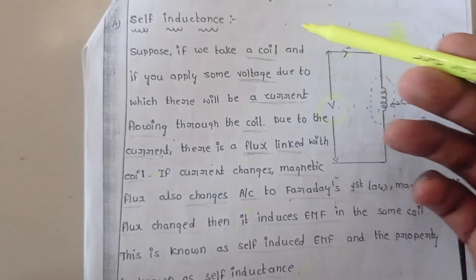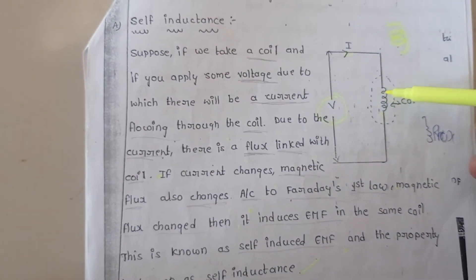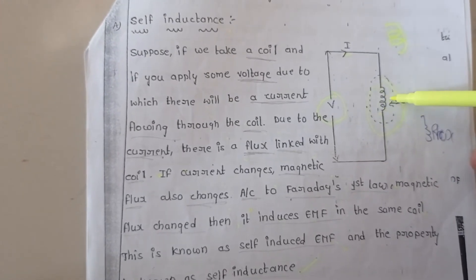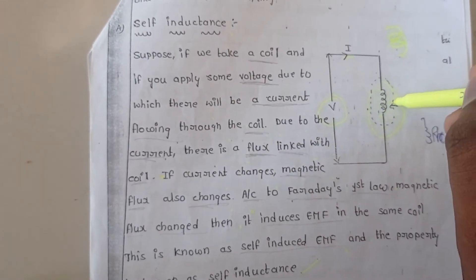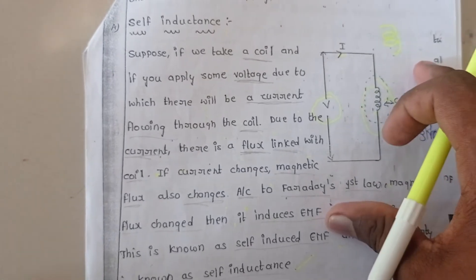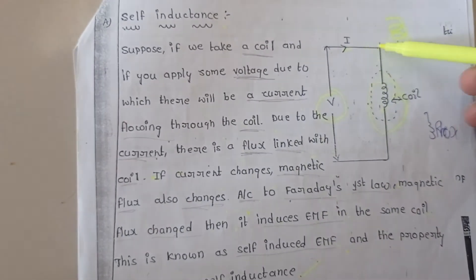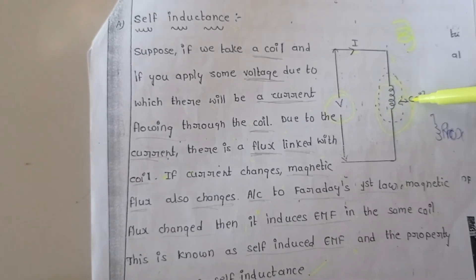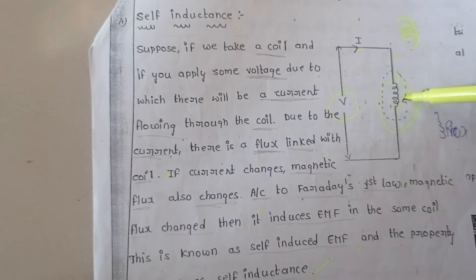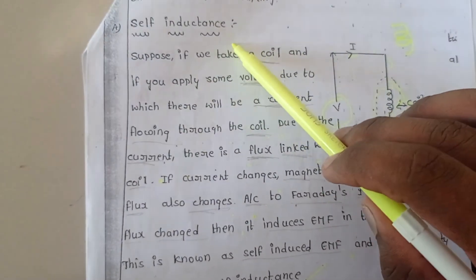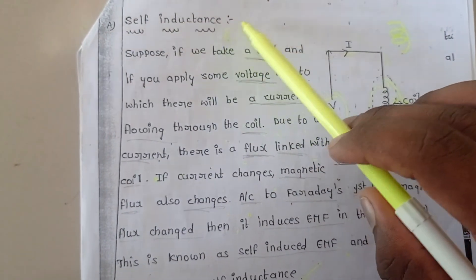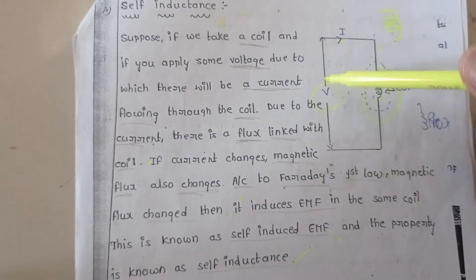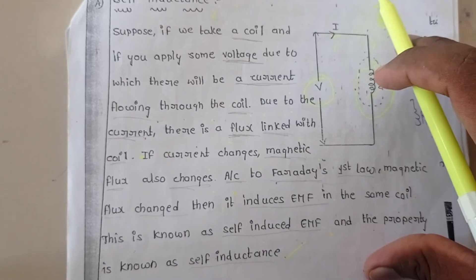Why we call this self inductance is because by passing current through this inductor only, the flux is linked with the same inductor. Whenever we pass some current to this inductor, a magnetic flux is produced, and that magnetic flux is again linked to the same inductor. This type of inductance is known as self inductance.